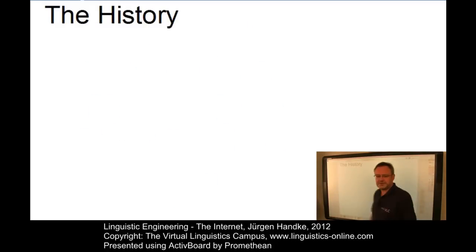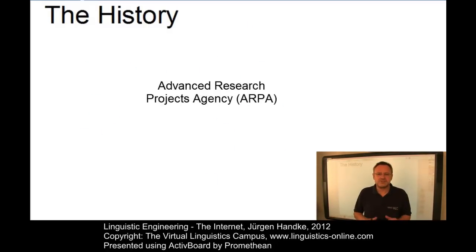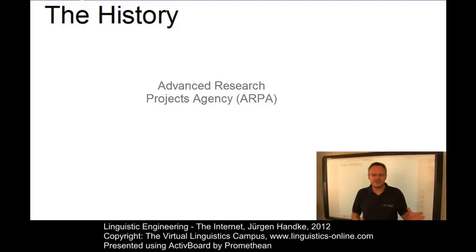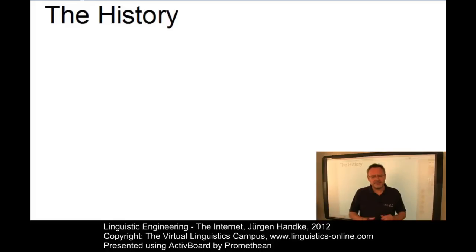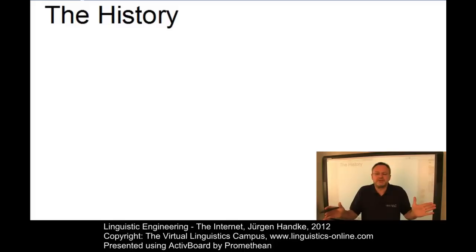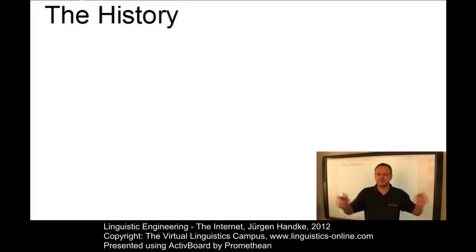The development of the Internet goes back to the 1960s when the Advanced Research Projects Agency, or ARPA, decided to interconnect their mainframe computers primarily for military purposes during the Cold War. In 1980, the military and the scientific parts of the ARPANET were separated, leaving the ARPANET to the global scientific community.